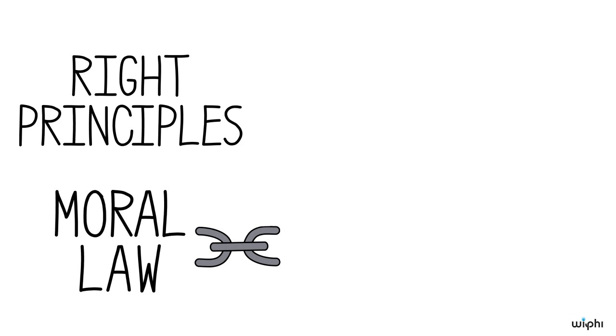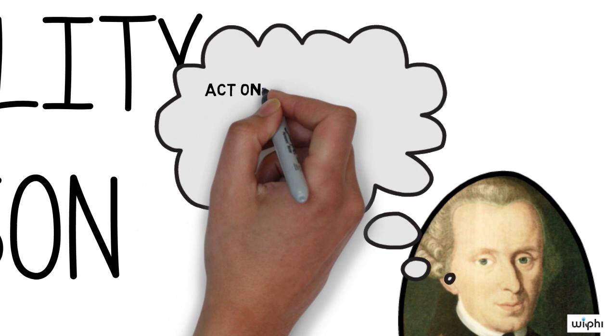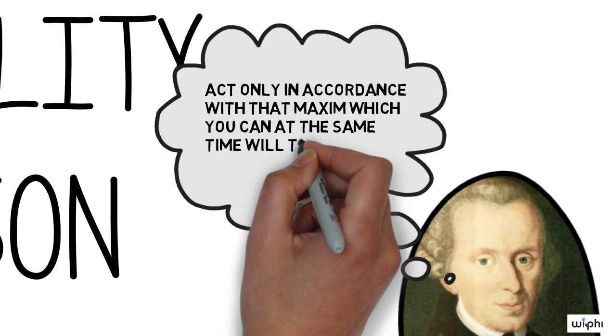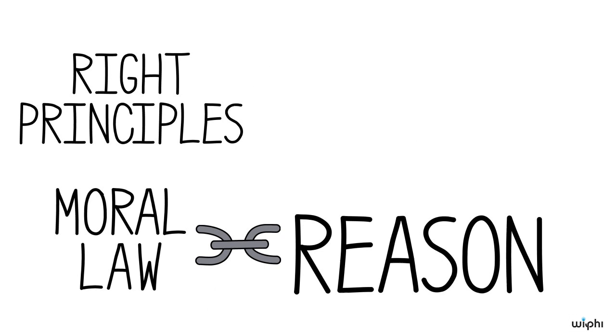Kant connects the moral law directly with reason as well, and he argues that reason dictates that individuals should act only in accordance with that maxim which you can at the same time will that it can become a universal law.